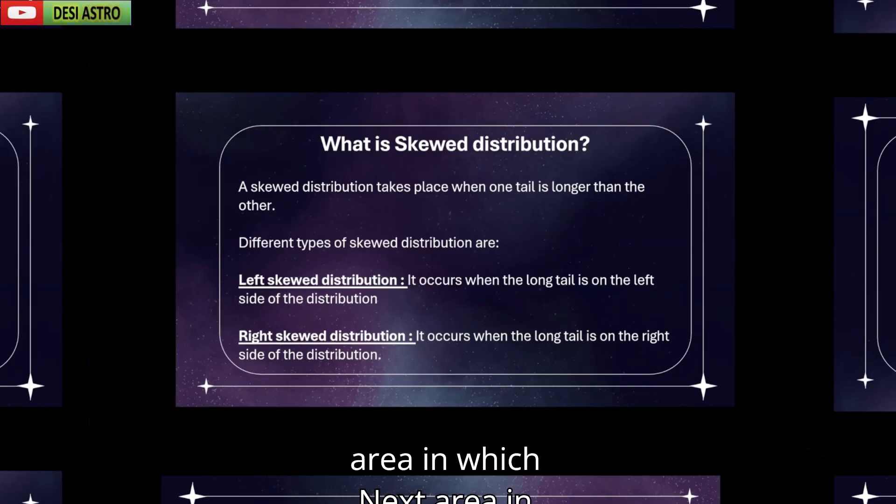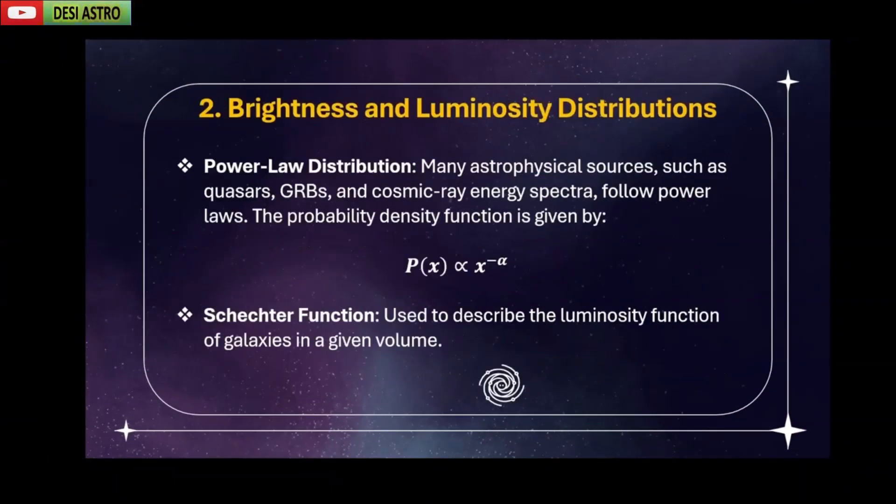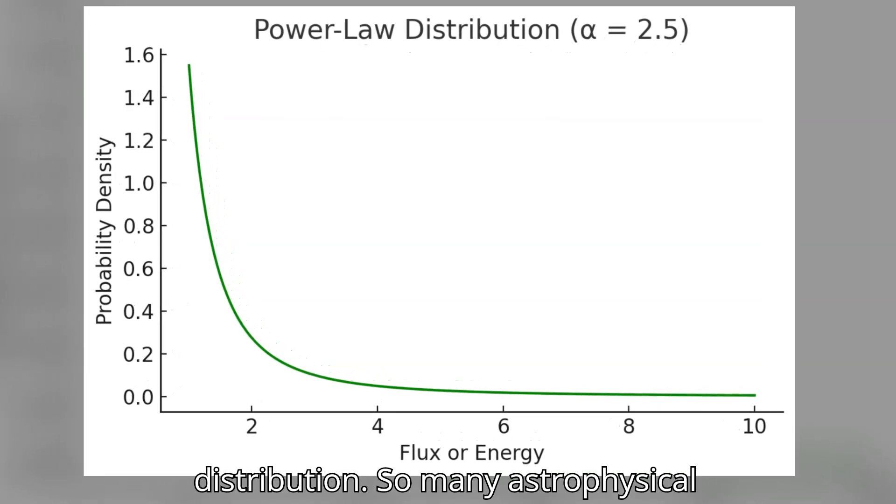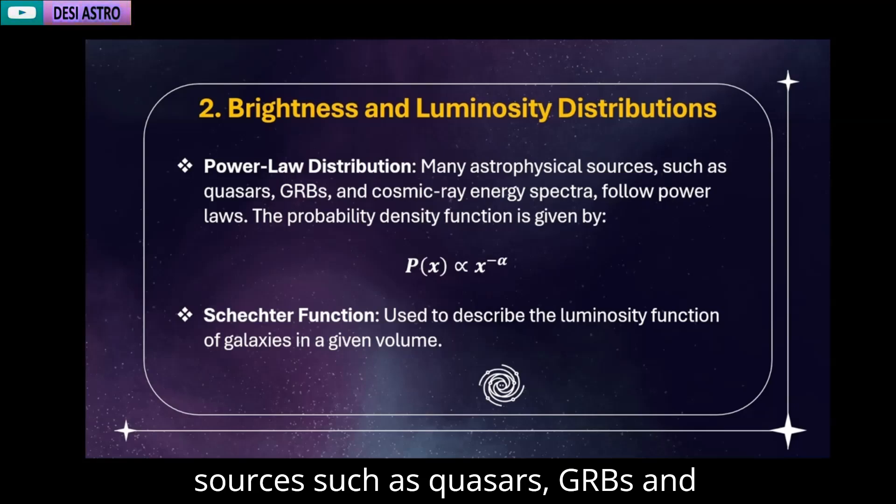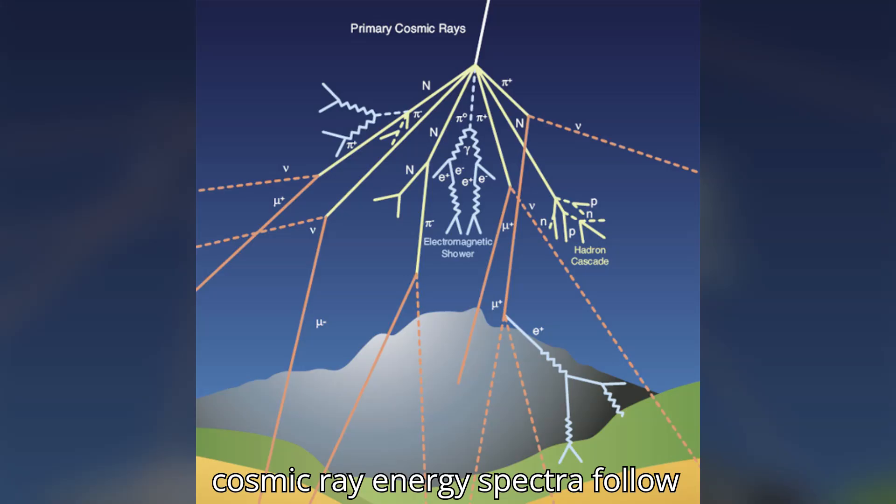Next area in which probability distribution is applied is brightness and luminosity distribution. The first one is power law distribution. Many astrophysical sources such as quasars, GRBs, and cosmic ray energy spectra follow power law distribution.